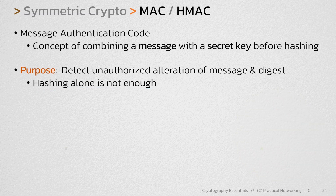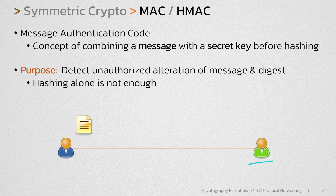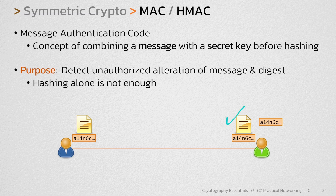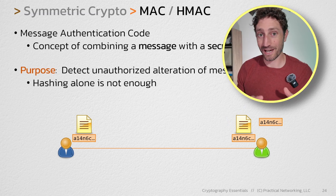Let's say you have these two users and the blue user has a message that it wants to send to the green user. A lot of folks think that all the blue user needs to do is simply hash the message to create a digest, then send the message and the digest across the wire. The theory is that the receiving user can then also hash the message, compare the digests, theoretically indicating that no one has modified the message in transit. But that won't actually work.